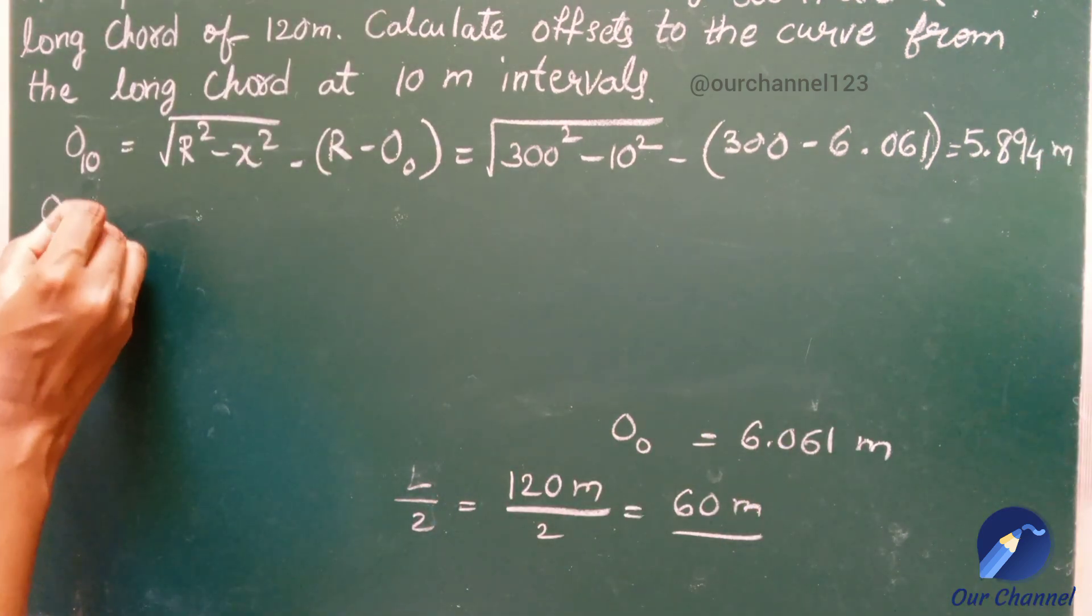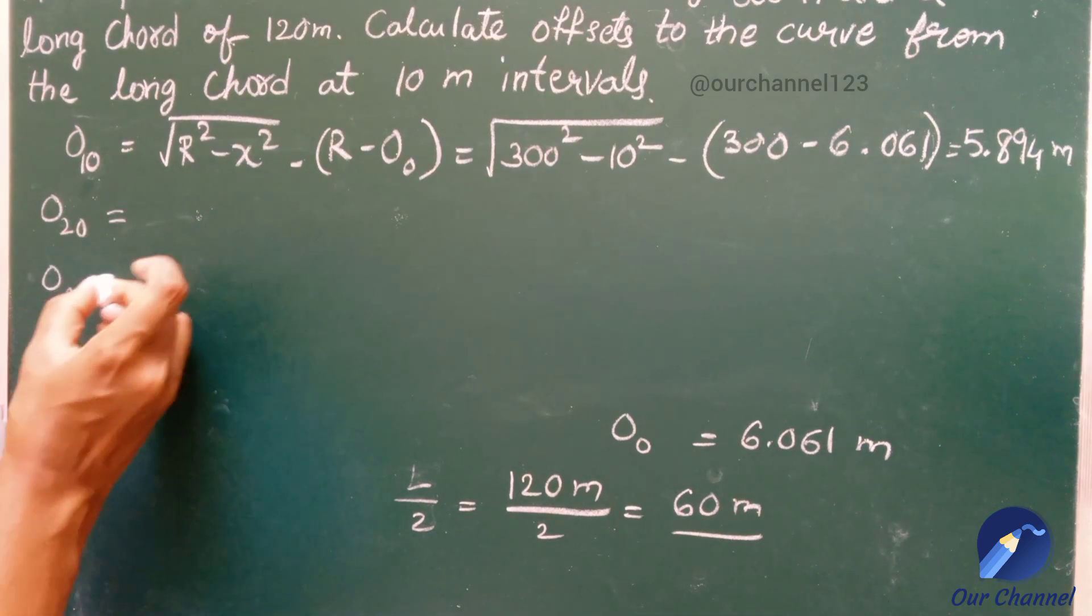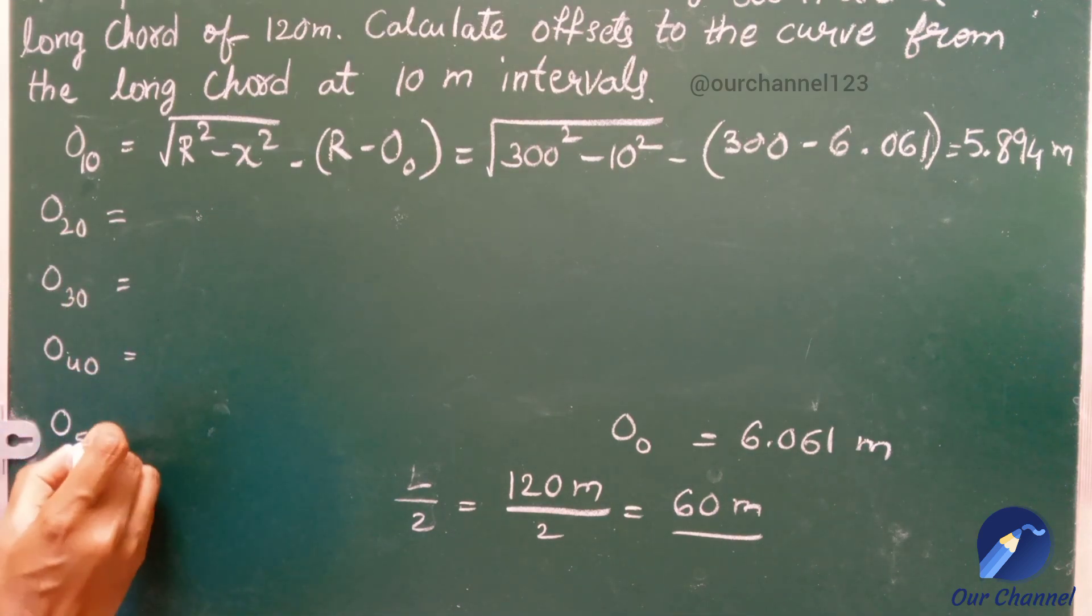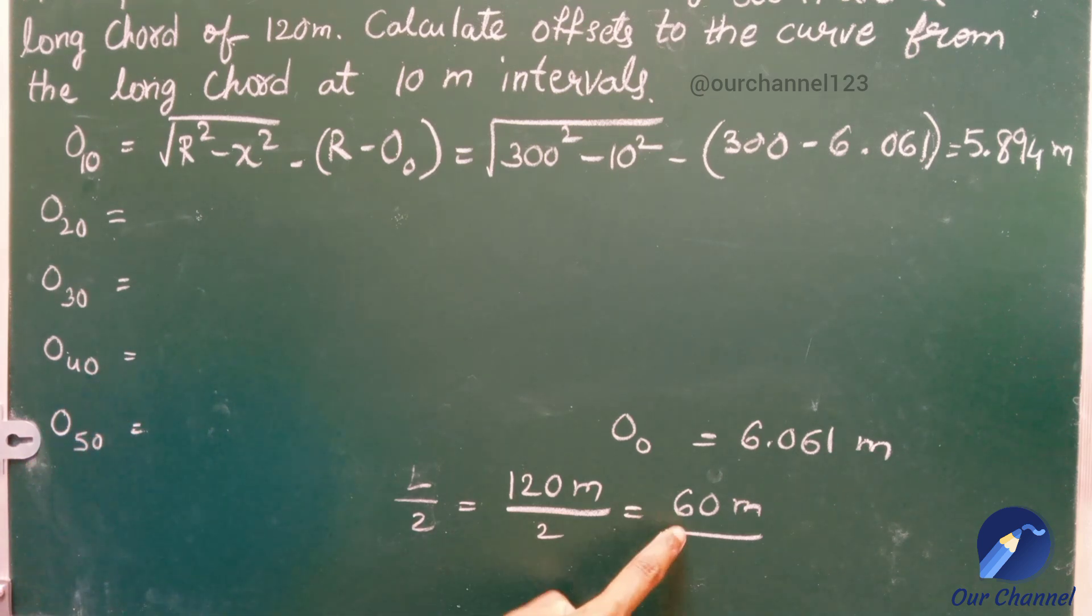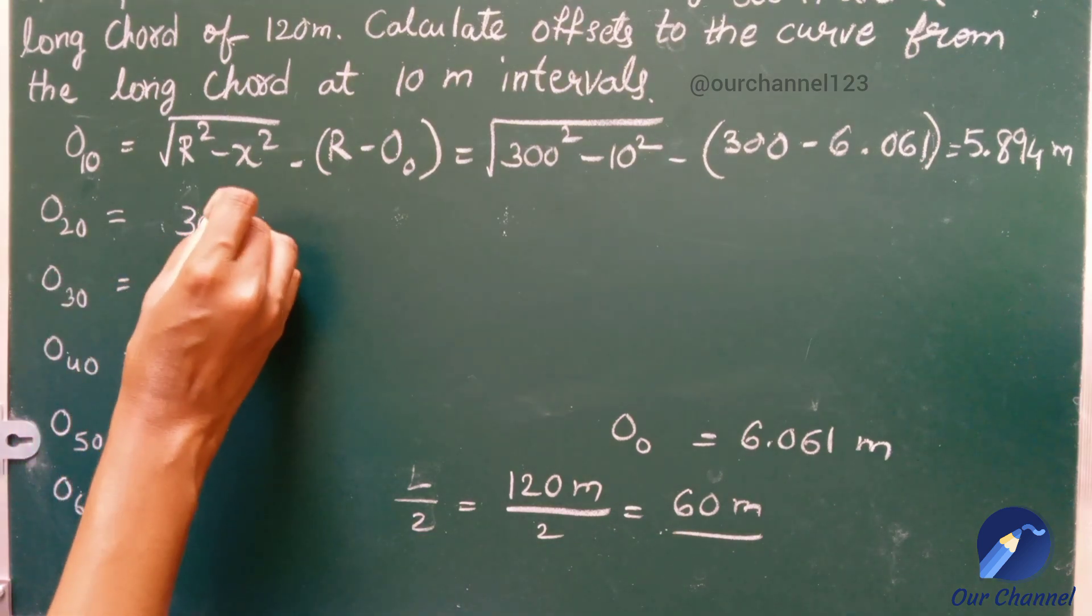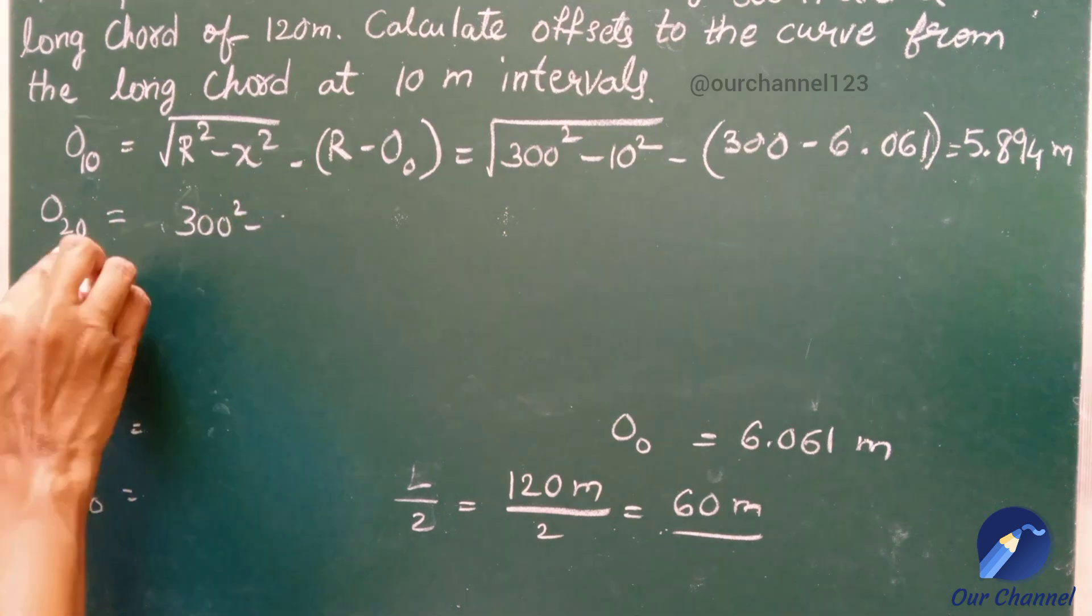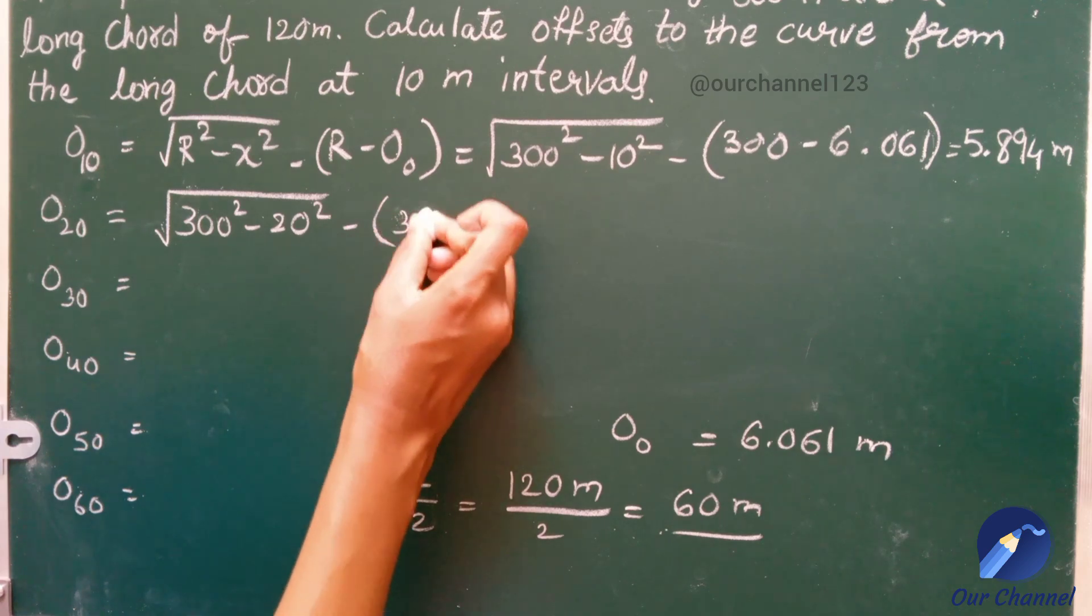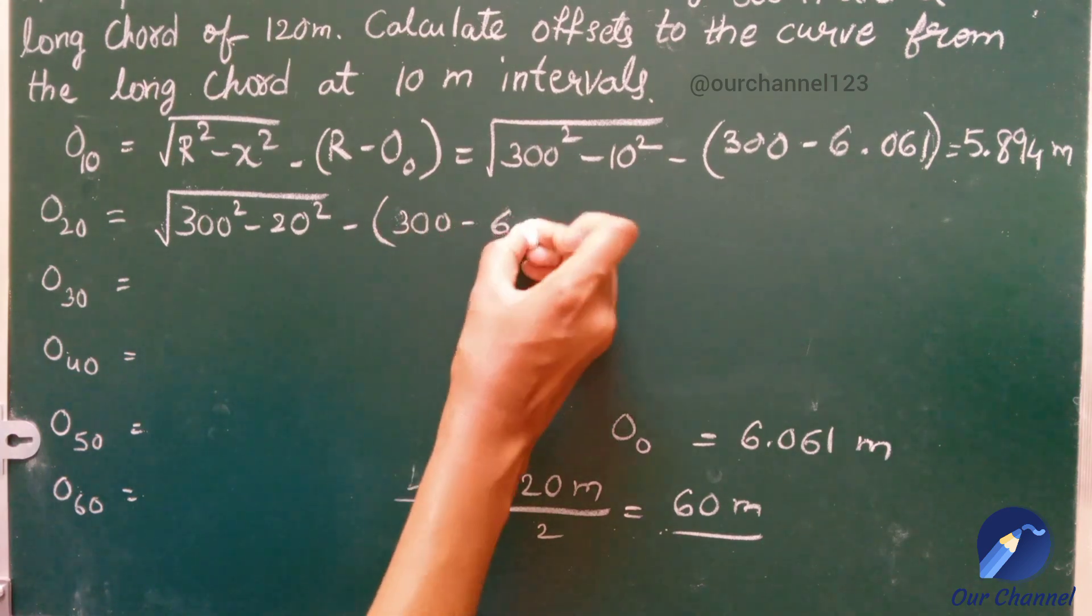We should calculate the ordinates at every 10 meter intervals, that is O₂₀, O₃₀, O₄₀, O₅₀, and the final one O₆₀. Substitute the values of R and O₀ and at x change it as 20, 30, 40, 50, 60 and find the answers.